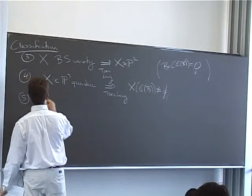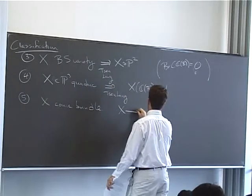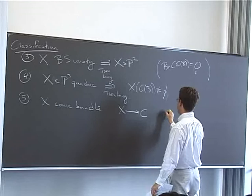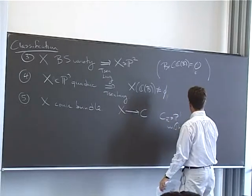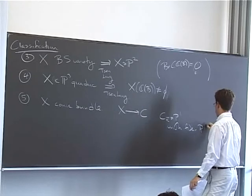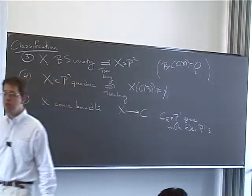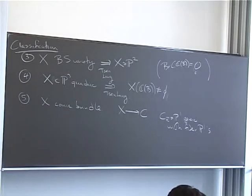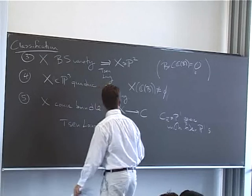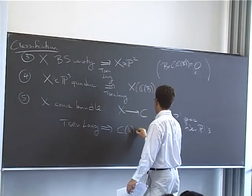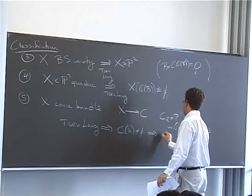So, let's assume that X is a conic. So we have X maps to C, this is a fibration by conic curves, which is geometrically, if you want, integral. So in this case, we just bootstrap. So, again, I'm starting to sound like a broken record.